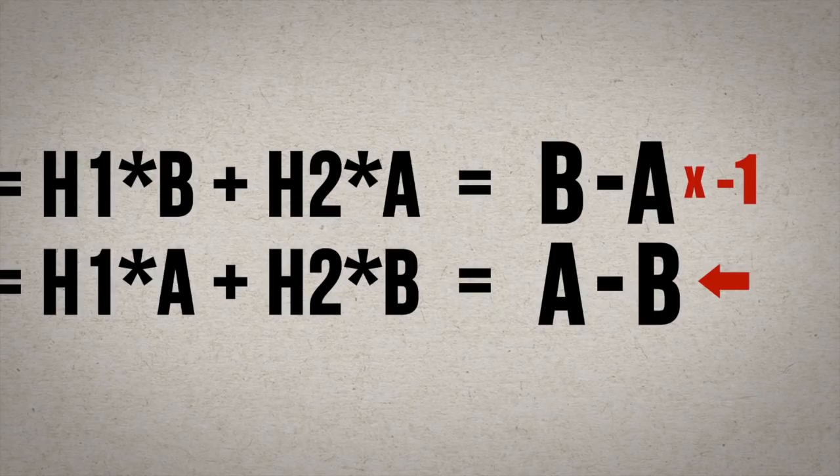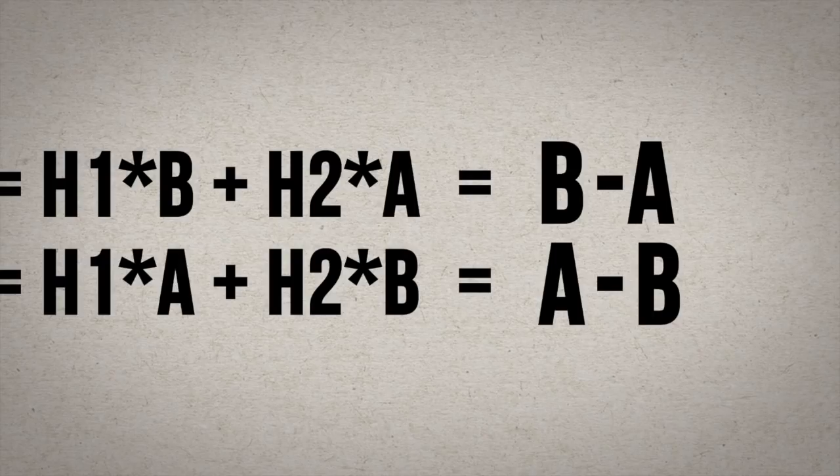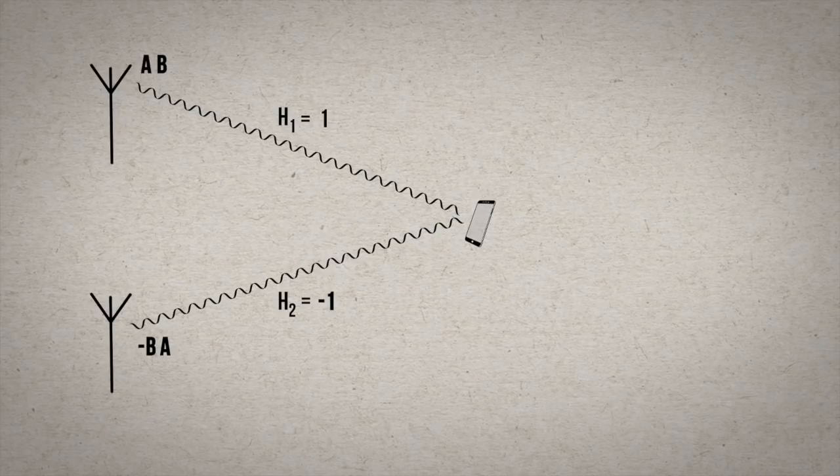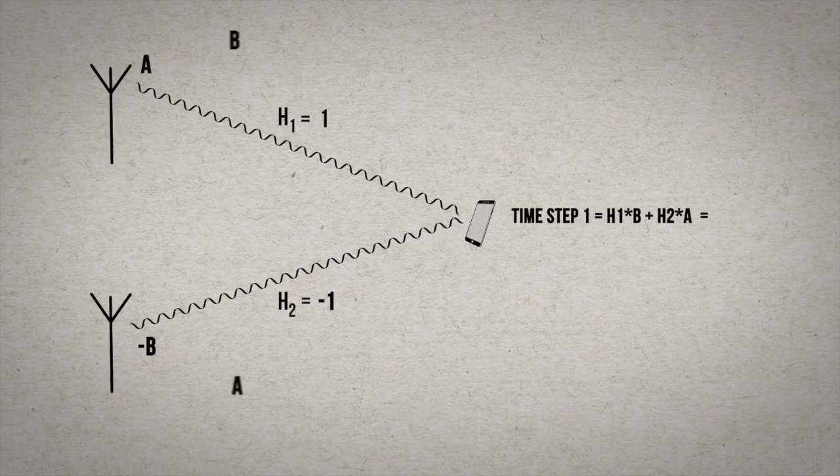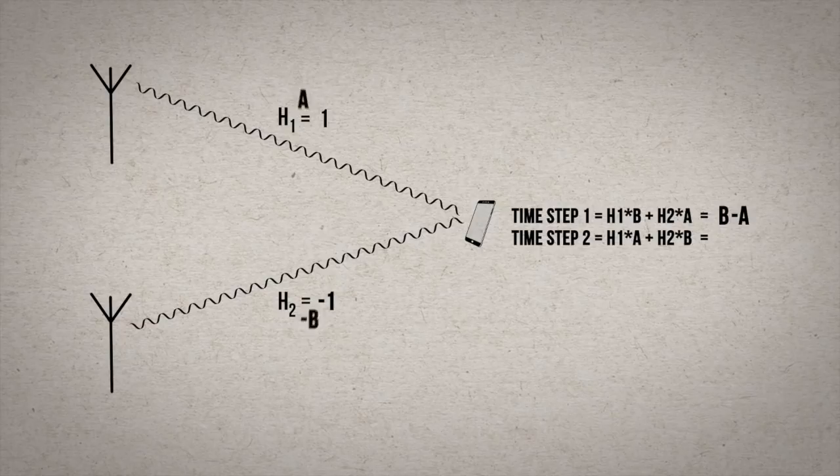Alamouti's clever trick to make this work was to make one of these measurements A plus B. One of the transmitters needs to send the negative value, or amplitude, of one of the symbols at one of the time slots. Alamouti chooses the first symbol from transmitter two to flip using a negative. So transmitter one sends A and then B. Transmitter two sends negative B and then A.